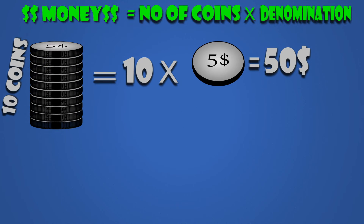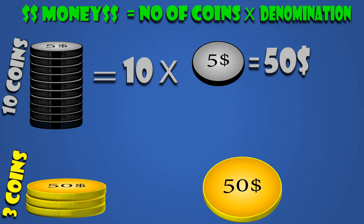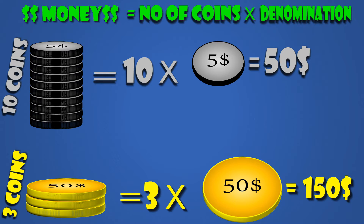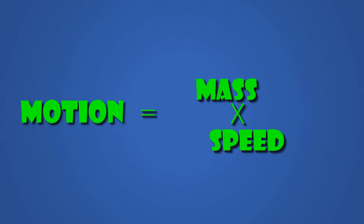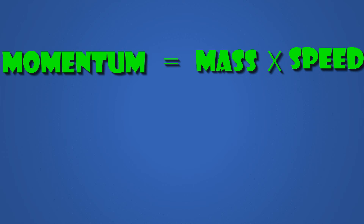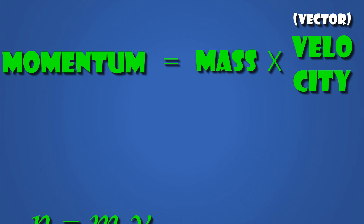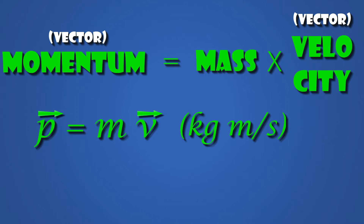Now if someone else had just three coins but each coin is a denomination of 50 bucks, then the total is 150. The number of coins is like the speed — the more you have it, the more money you have, but it is not equal to the amount of money. The denomination is like mass. You've got to multiply them to calculate the total motion an object has. The technical term for this quantity is momentum. And when I said speed, I actually meant velocity — you need to take into account the direction as well. This makes momentum a vector quantity, giving it the units of kilograms meter per second.